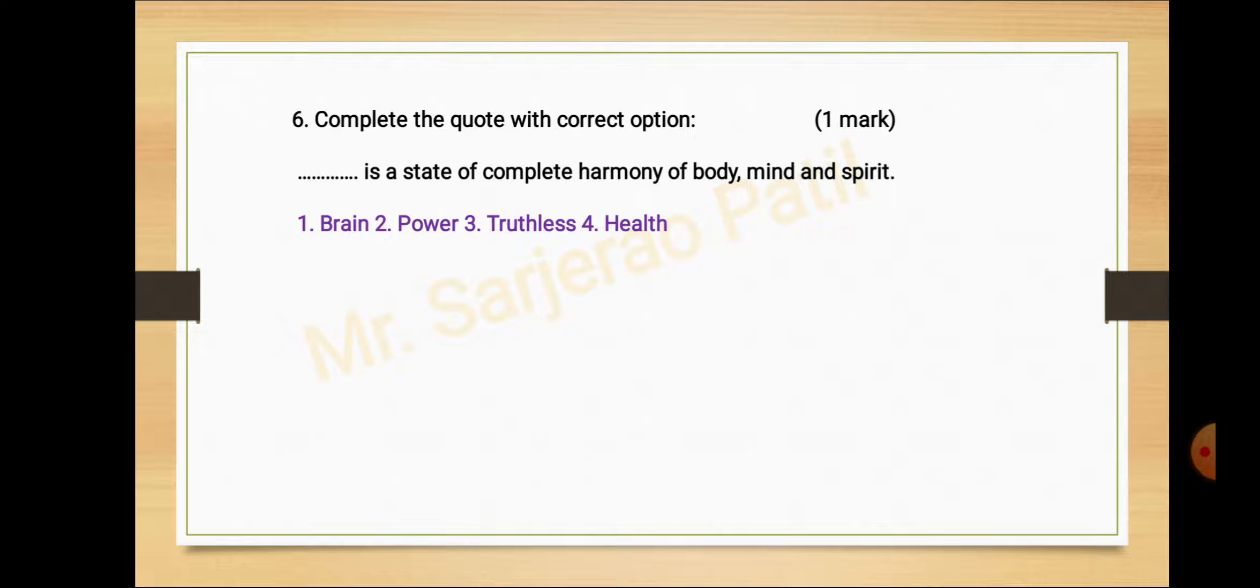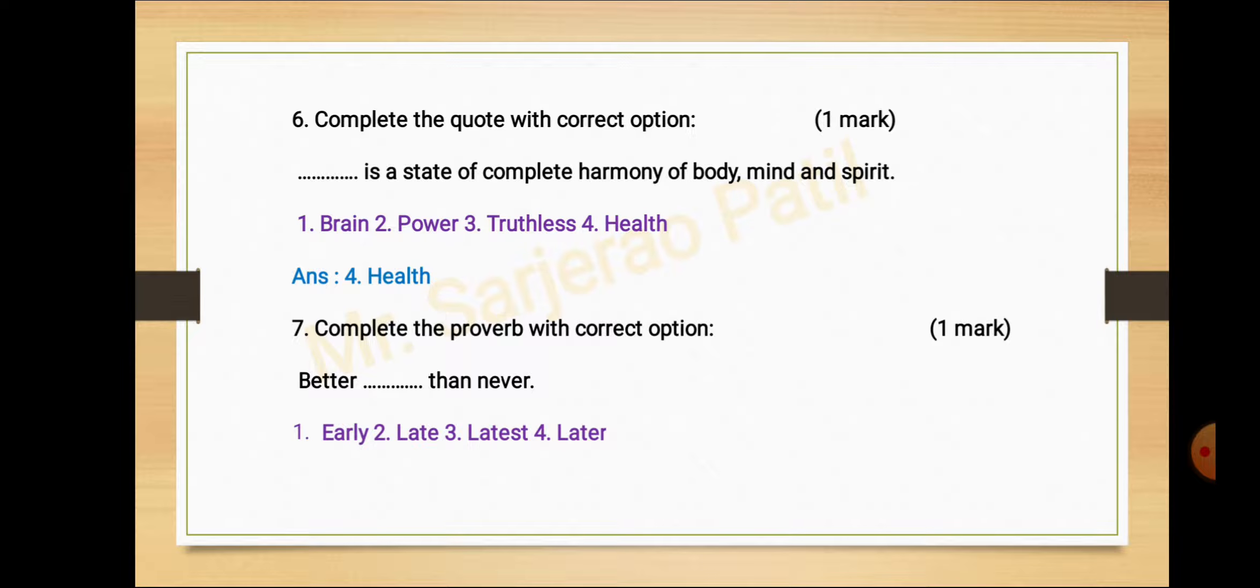Activity number six, complete the quote with correct option. Dash dash is the state of complete harmonious body, mind and spirit. Option number one brain, second power, third truthfulness, and fourth health. Option number fourth, health.